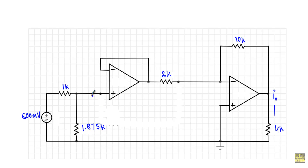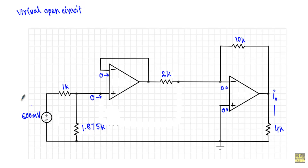Due to negative feedback, the current through the inverting terminal will be 0 and the current through the non-inverting terminal will also be 0, meaning these terminals act like virtual open circuits with no current flow. Therefore the 600mV source will be absorbed only by the 1kΩ resistor and the 1.875kΩ equivalent resistor. I can calculate the voltage at node VP1 using the voltage divider rule.